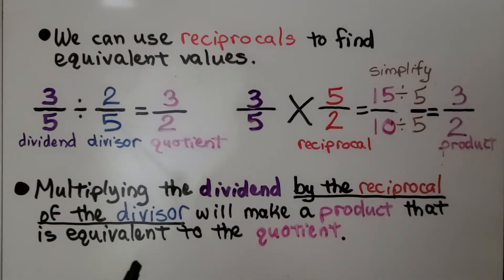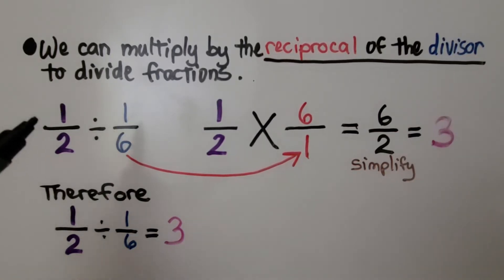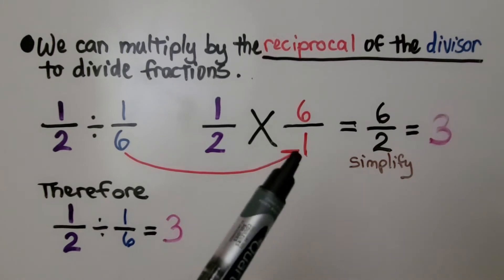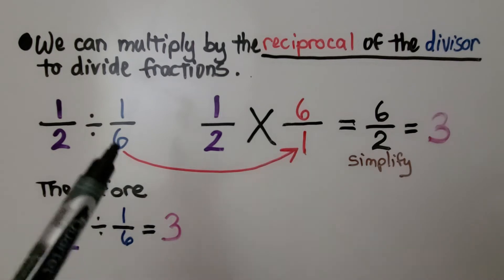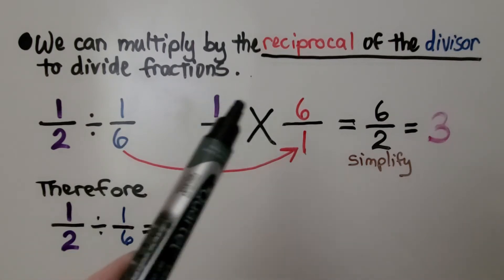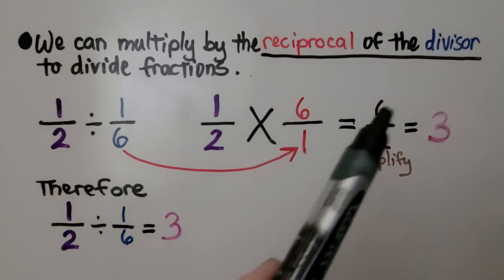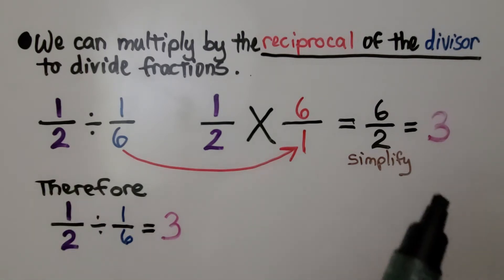Multiplying the dividend by the reciprocal of the divisor will make a product that is equivalent to the quotient. Here's another example: we have one-half divided by one-sixth. We multiply by the reciprocal of the divisor. Remember, the reciprocal is a flipped upside-down version of that fraction. We get one times six is six, two times one is two. We simplify it: six divided by two is three. Therefore, one-half divided by one-sixth is equal to three.